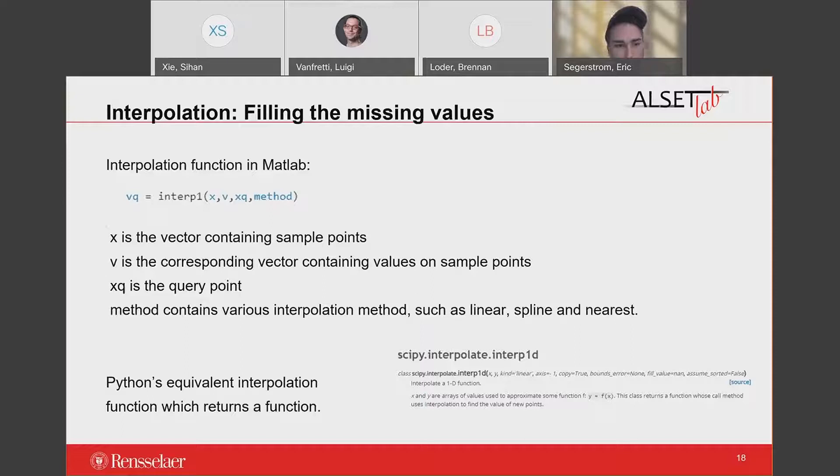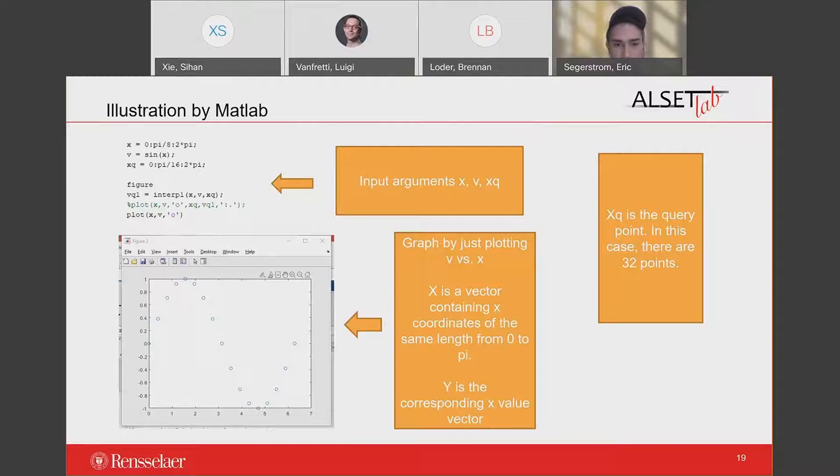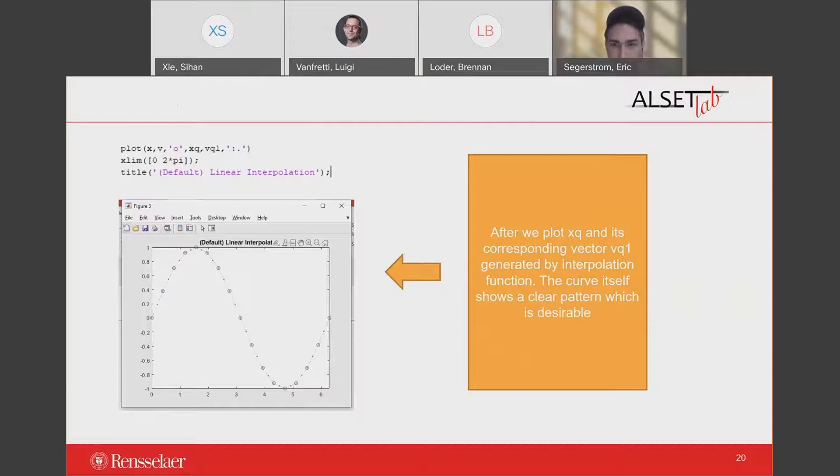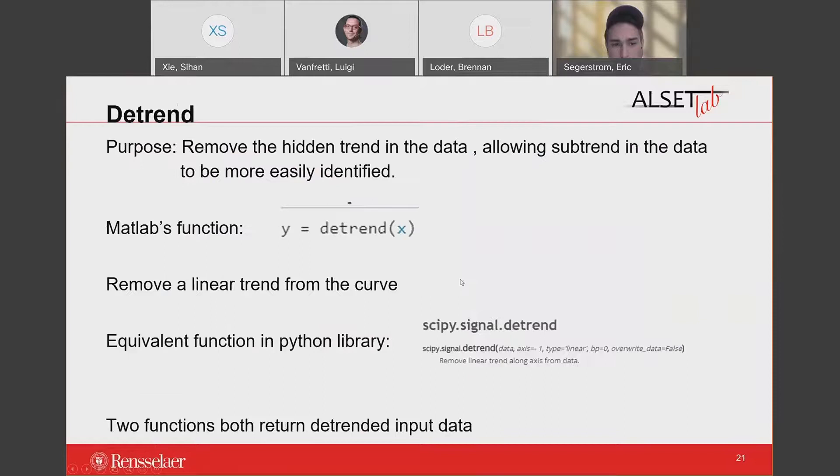I will use MATLAB to make a simple illustration. I create an X coordinates vector X and its corresponding Y coordinates vector V. By plotting V versus X, we can get the original curve shown below. I set 16 query points from 0 to pi. Therefore, the function will produce totally 32 values corresponding to the 32 query points. This is the picture by plotting Xq and its corresponding Vq. We can see that the curve shows a clear pattern by applying the linear interpolation. So linear interpolation may be the best way to fill the missing value because it's simple and fast.